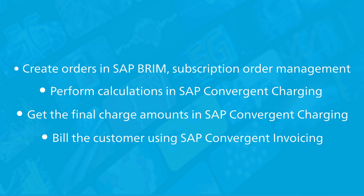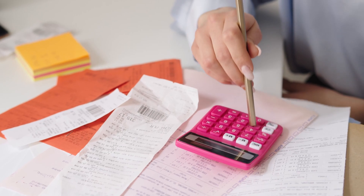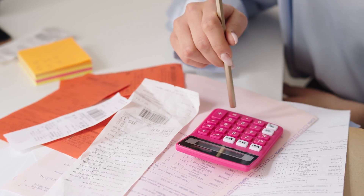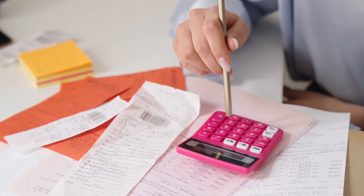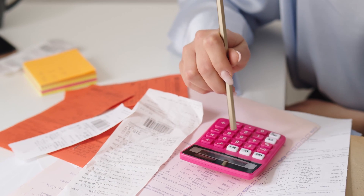To summarize at a high level: you create orders in SAP Brim subscription order management, perform calculations in SAP Convergent Charging for an order based on usage, and get the final charge amounts in SAP Convergent Charging. Bills and invoices are sent to the customer using SAP Convergent Invoicing. Finally, in contract accounting, you post the financial documents and receive/make payments. You also use contract accounting for dispute management, credit management, and collections.